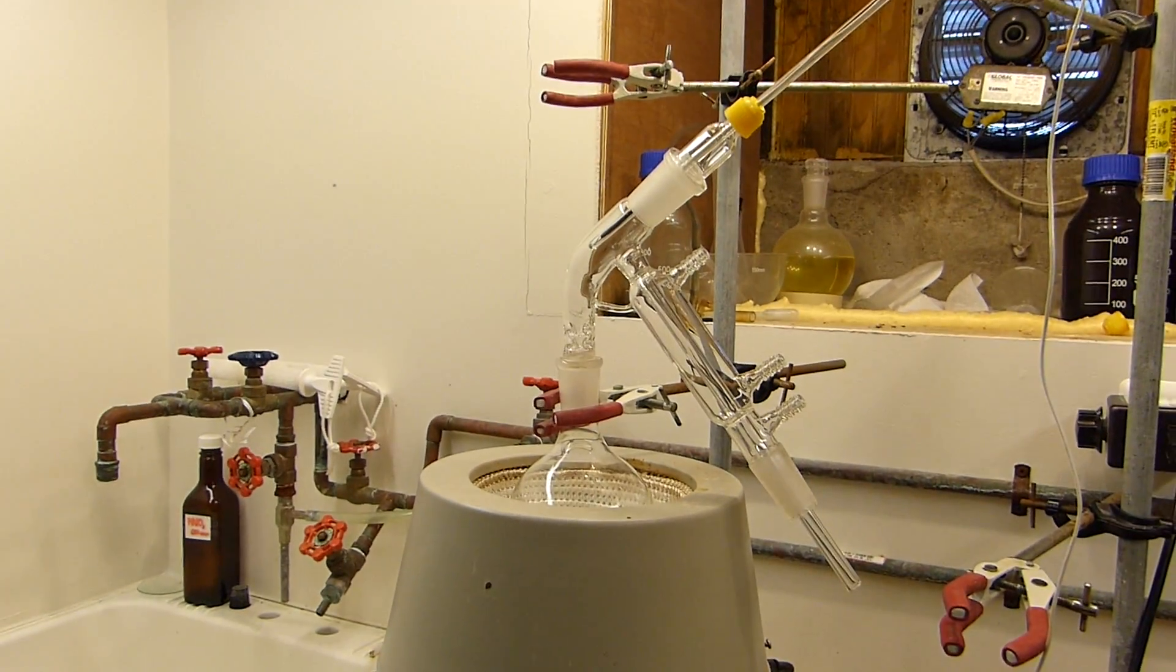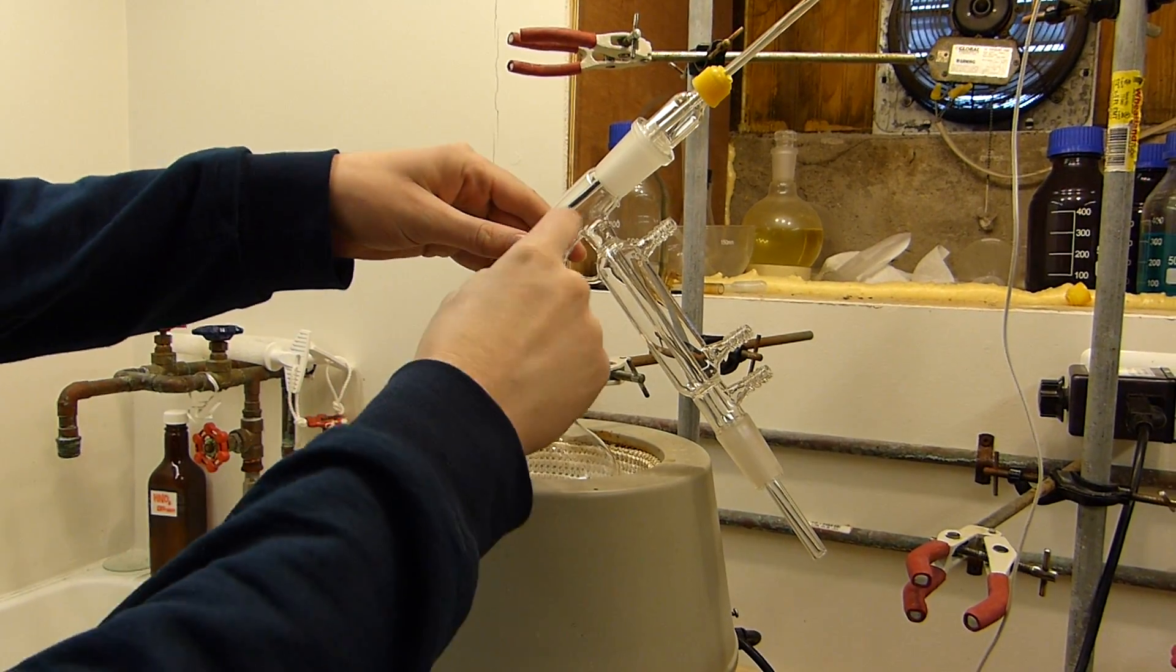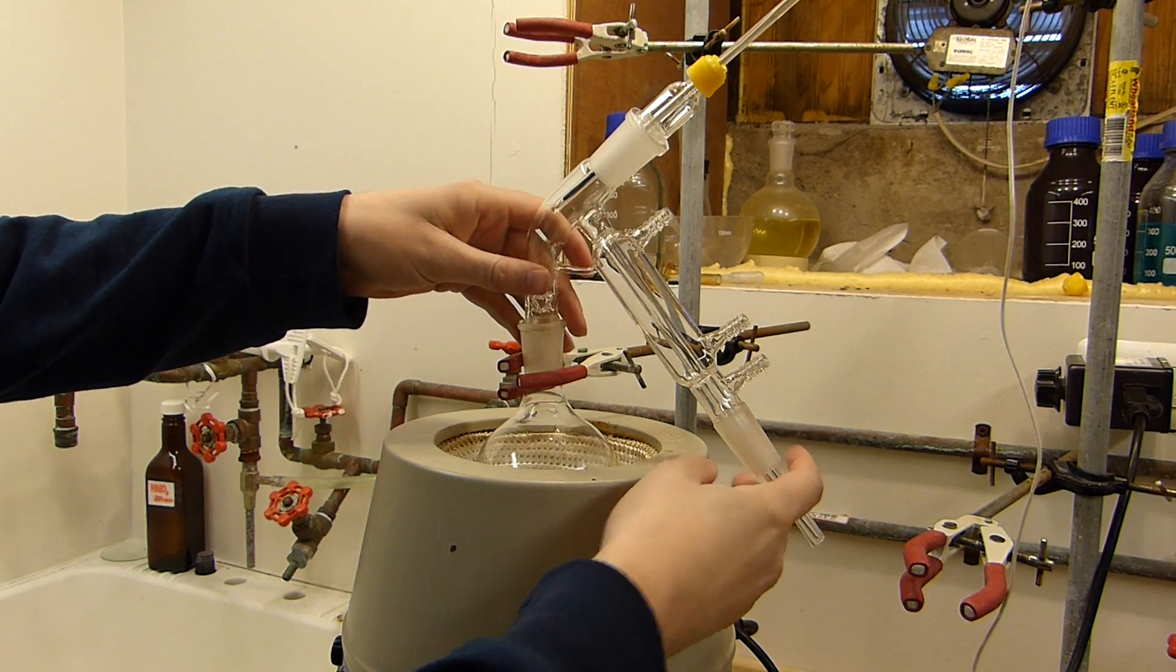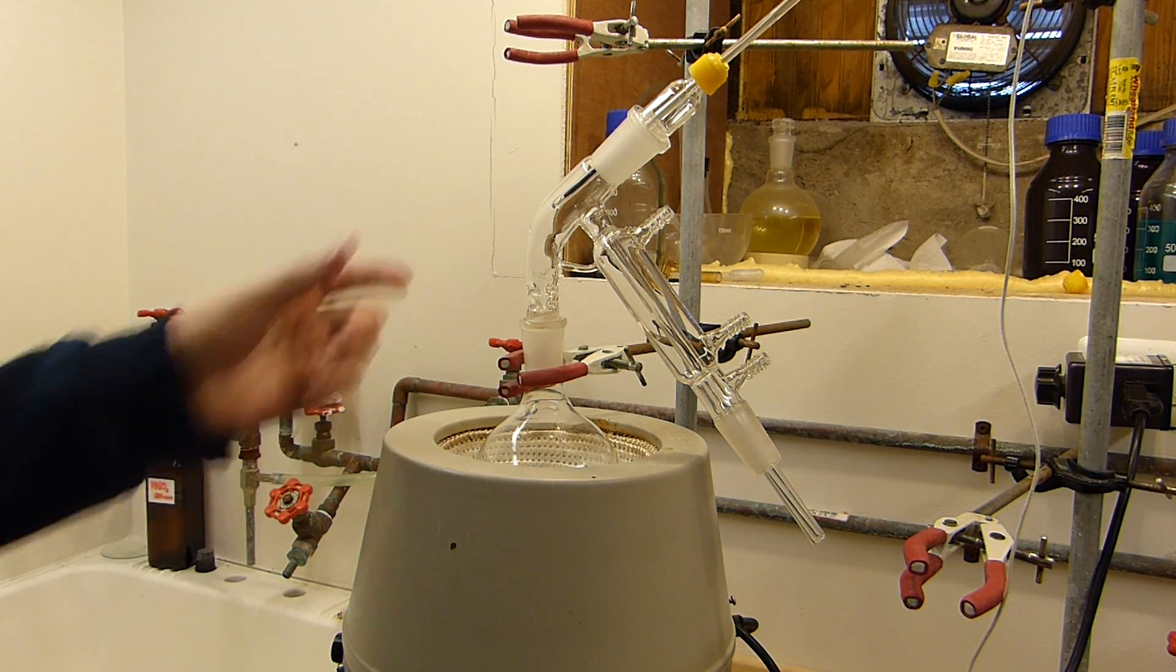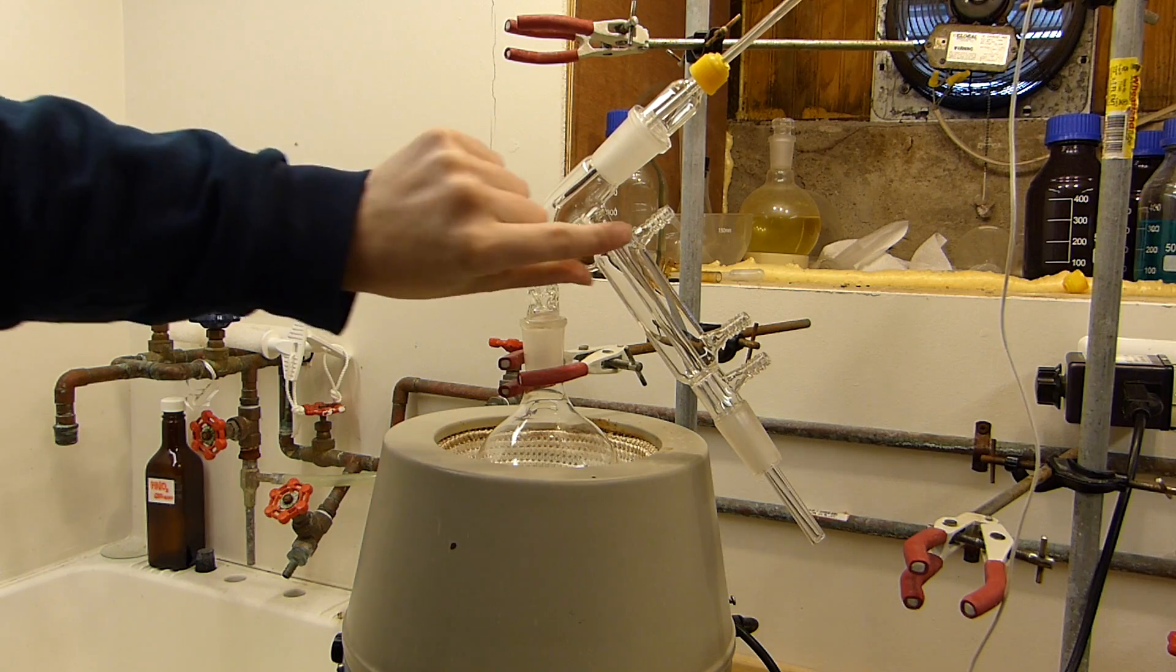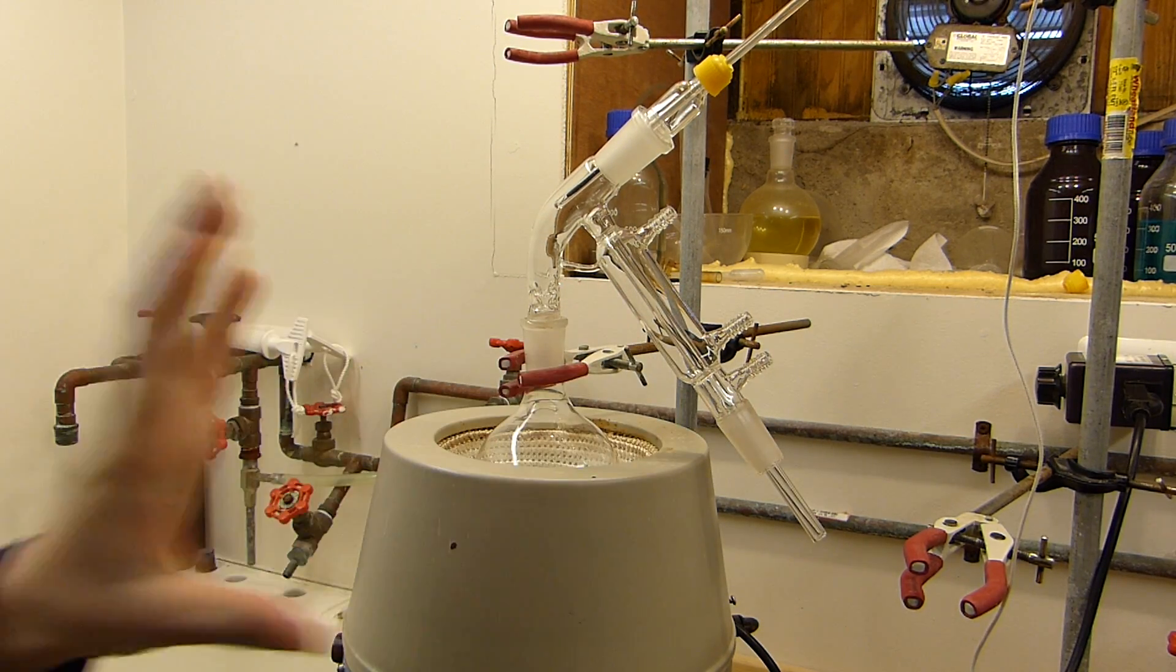So I'm using this special type of apparatus here. This piece is called a short path condenser, a short path distillation head slash condenser, whatever you want to call it. And essentially it combines the distillation head, the condenser, and the vacuum takeoff adapter all in one.